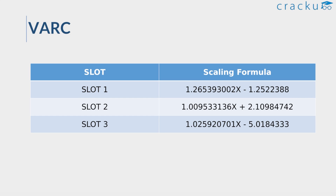Based on the response sheets and scorecards we received from candidates, we came up with the scaling formula that was used to convert raw scores to scaled scores. For the Slot 1 VARC section, this was the formula used to convert your raw scores. For example, if you have a raw score of 20 in VARC Slot 1, you can use this formula to get your scaled score. Similarly, this was the formula for Slot 2, and this one for Slot 3.